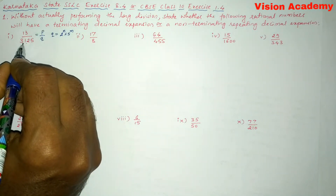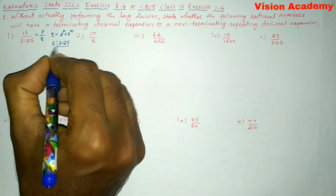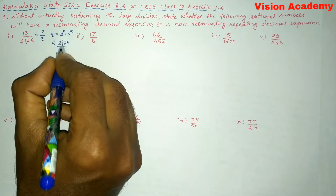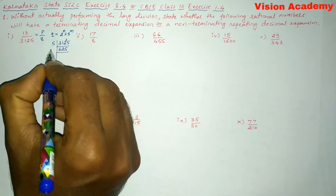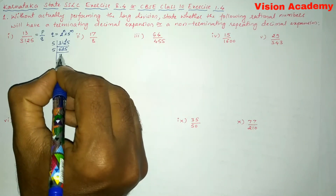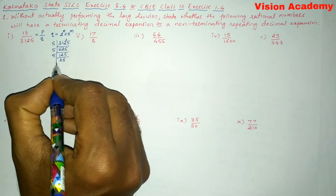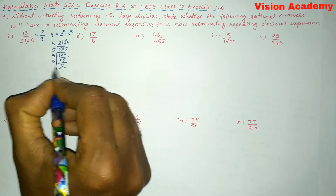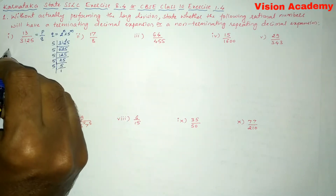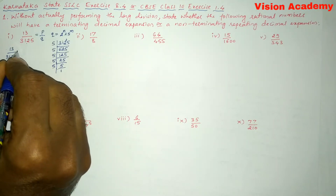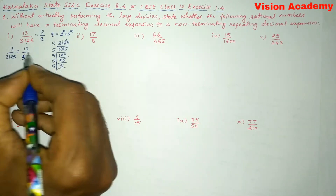Roman number one: 13 divided by 3125. Let us expand this denominator. 3125 — we divide by the prime factor 5 because it is ending in 5. Dividing repeatedly: 3125 ÷ 5 = 625, 625 ÷ 5 = 125, 125 ÷ 5 = 25, 25 ÷ 5 = 5, 5 ÷ 5 = 1. So 3125 = 5 to the power 5.